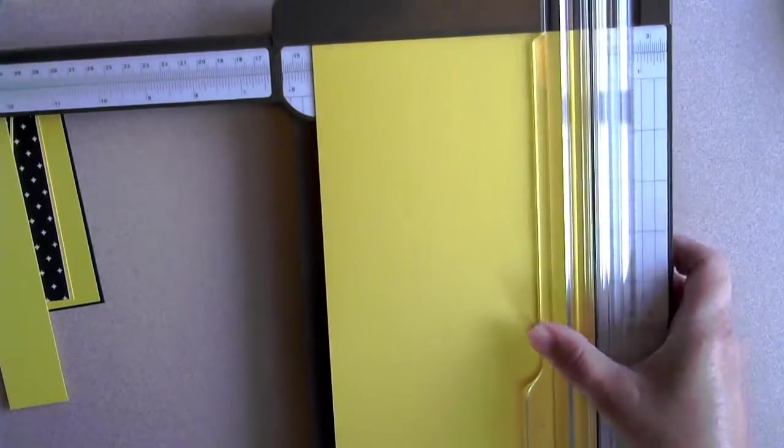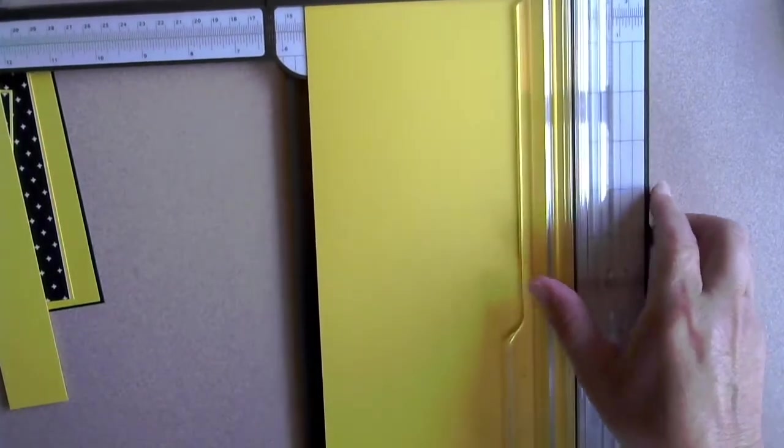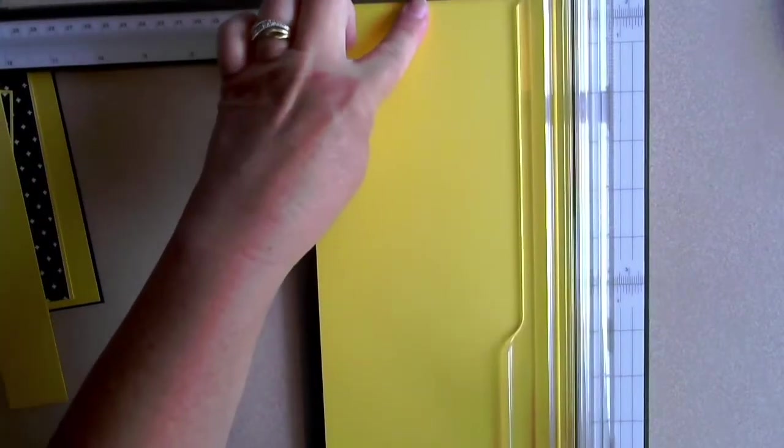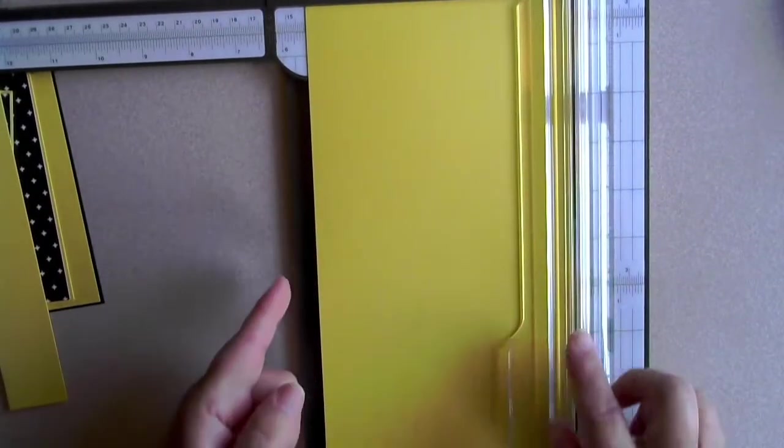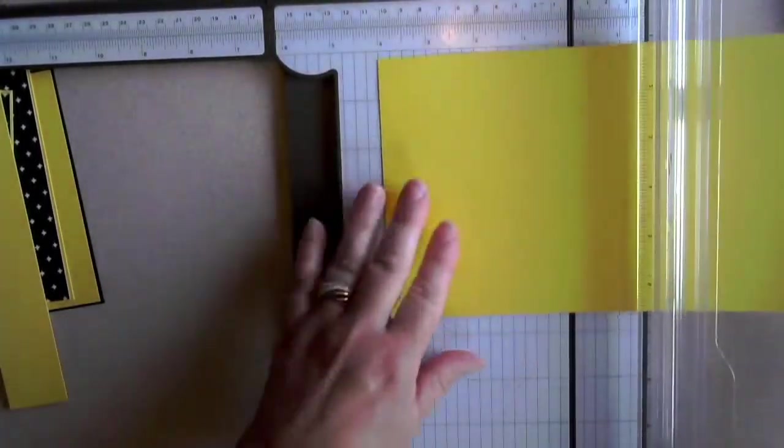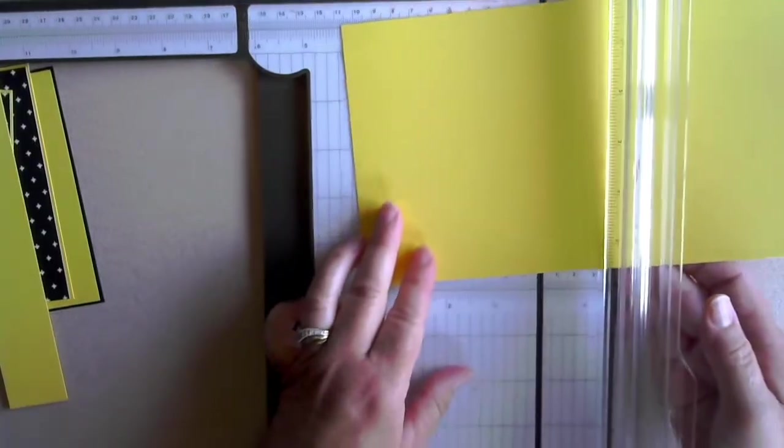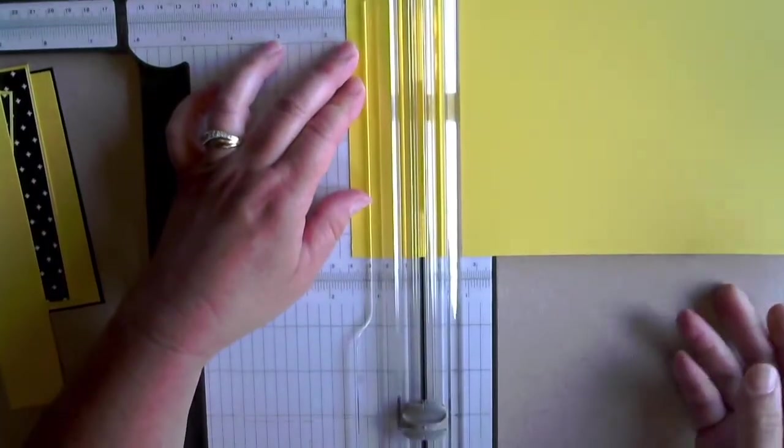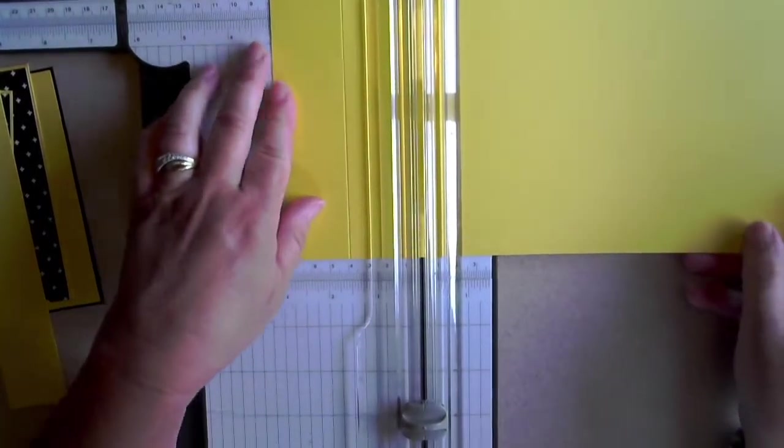So that's all of our layers, all ready to go on the card. Now the fun part. So let's pull in our trimmer and start working on our card base. Now our card base is 11 inches long. That's a whole piece of card stock and five and a half inches wide. And then we're going to add a couple of score lines on it.